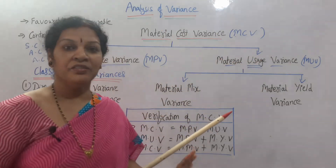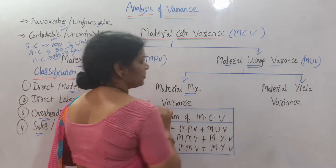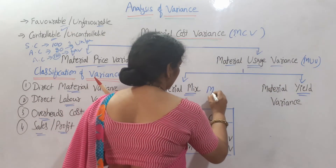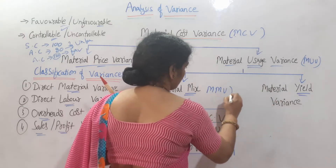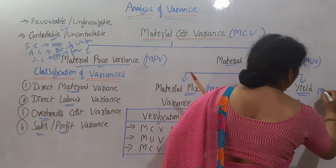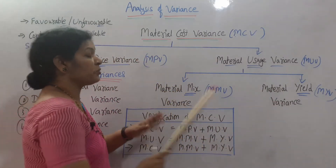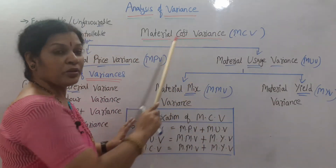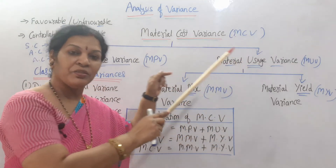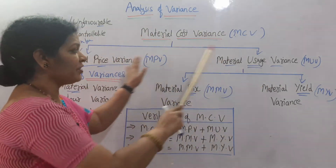Material usage variance is once again divided into two parts: material mix variance (MMV) and material yield variance (MYV). So there are five things in total. Material cost variance is divided into material price variance and material usage variance. Material usage variance is divided into material mix variance and material yield variance — five types of problems to work out, each with different formulas.